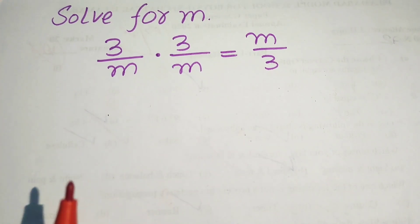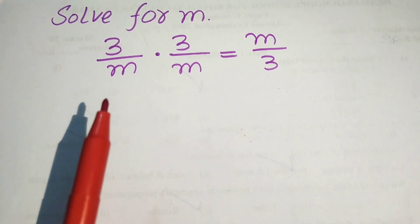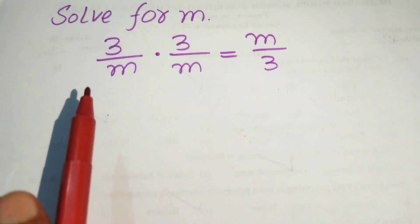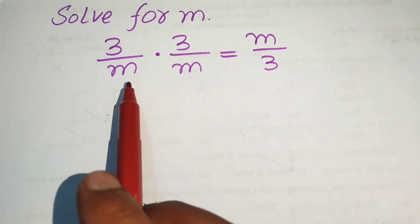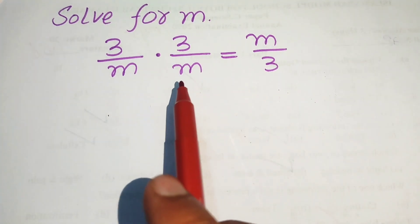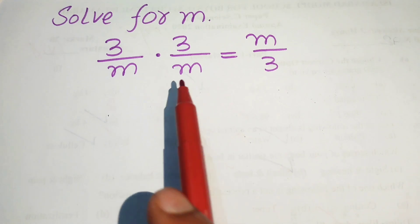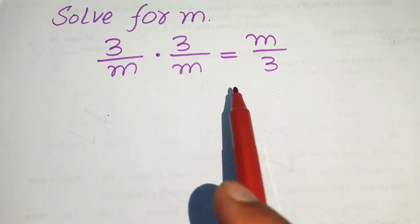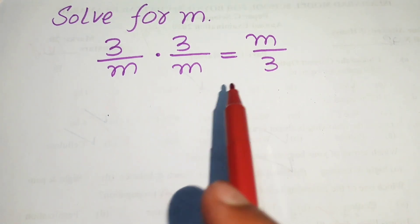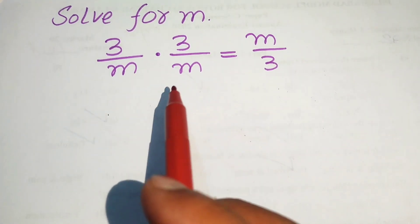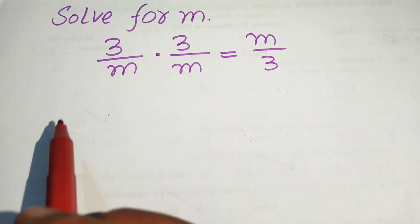Hello everyone, how to solve for m in this problem? We have 3 over m times 3 over m equals to m over 3. So, we find the value of m here.